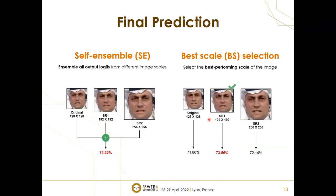After training, when we test, we try two different prediction strategies. The first is to assemble the output logits from each resolution and calculate the final probability of being fake. The second is to select the best-performing scale among all the images. We compare both strategies against other models.